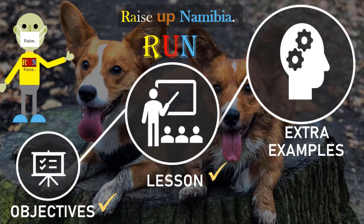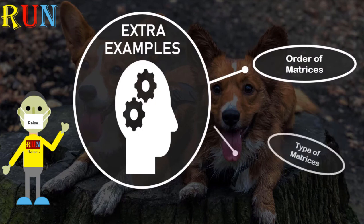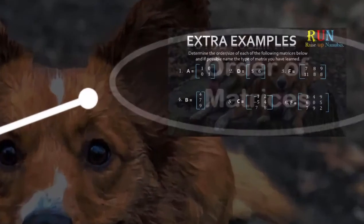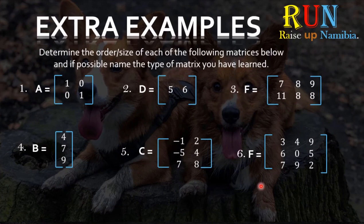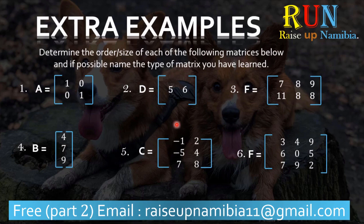Now that we are done with the lesson, let's take a look at some extra examples, which will include the order of matrices and the types of matrices you have learned within this tutorial. Here's the question: determine the order or size of each of the following matrices below and, if possible, name the type of matrix. For each number, find the order of the matrix, then if possible name what type of matrix it is. So feel free to pause the video now — the answers will be in a downloadable PDF.